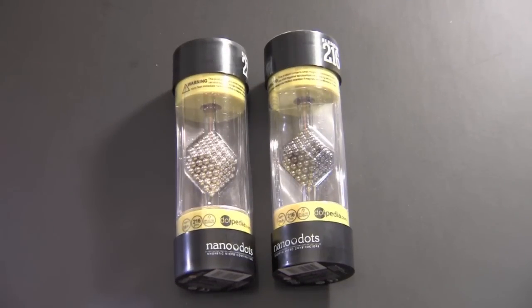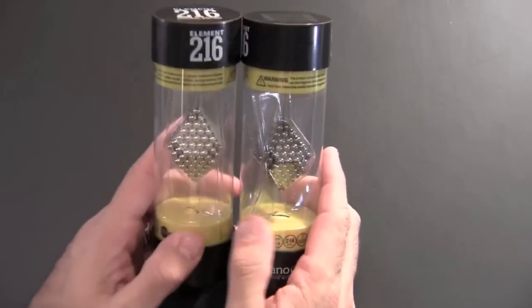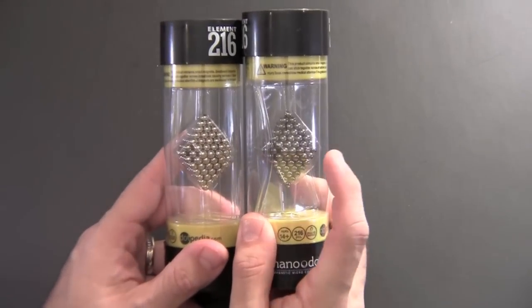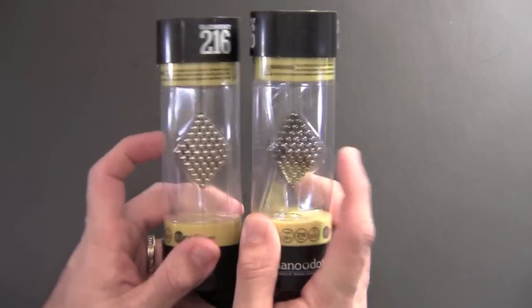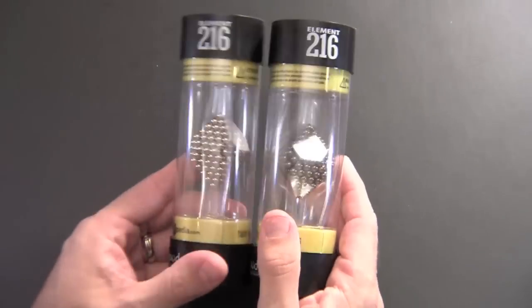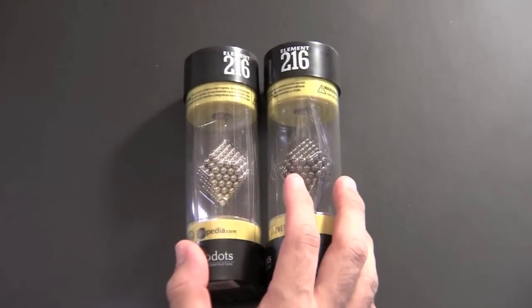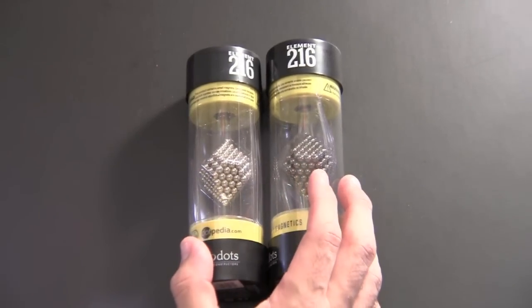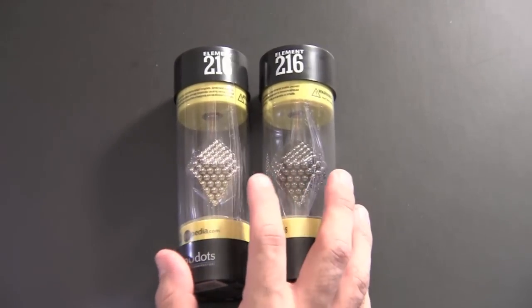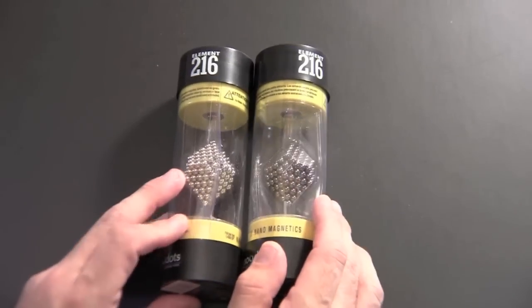What are NanoDots? NanoDots are magnetic constructors. They're made for individuals 14 and older and they're kind of a cross between a toy and a puzzle and maybe some other things thrown in there. Basically they are super strong magnets in the shape of these little tiny balls that you can use to form into a variety of shapes and sizes and jewelry and all kinds of different things.